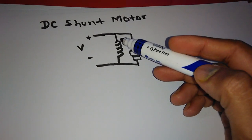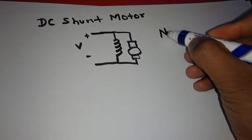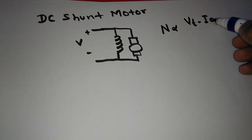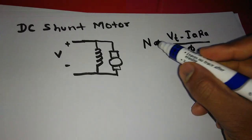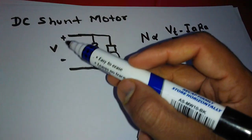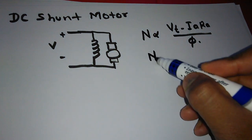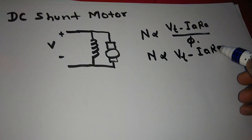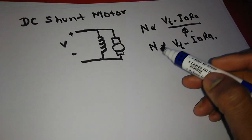Here the voltage supply to field winding is constant so that constant flux will be there. So we can use the speed equation: N is equal to Vt minus IaRa upon phi. From this equation we can assume that flux is constant because the supply voltage across the field winding is constant. So from this relation we can get N is proportional to Vt minus IaRa. As load current increases, speed will decrease.